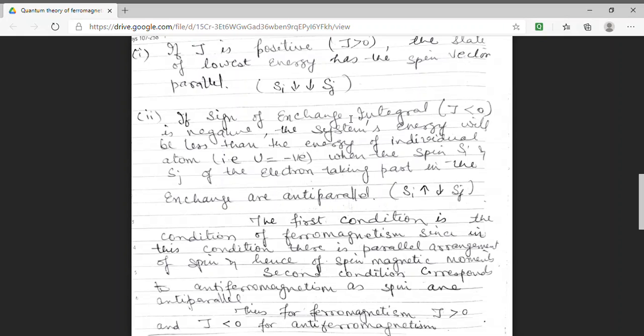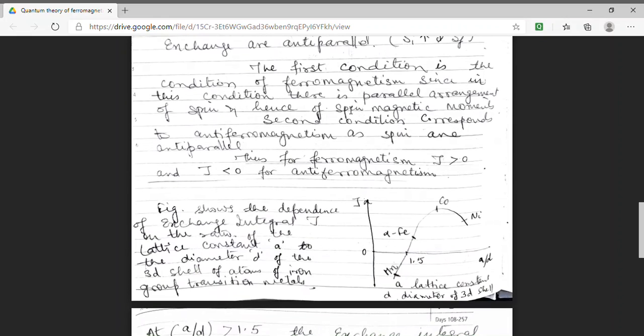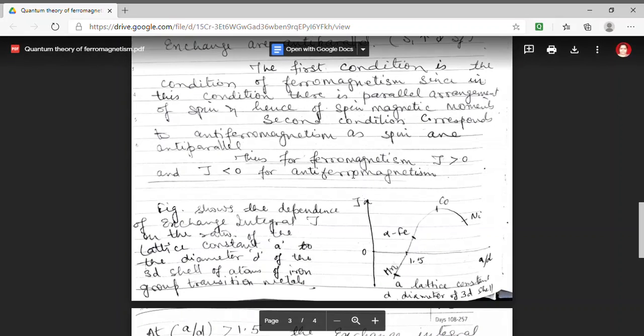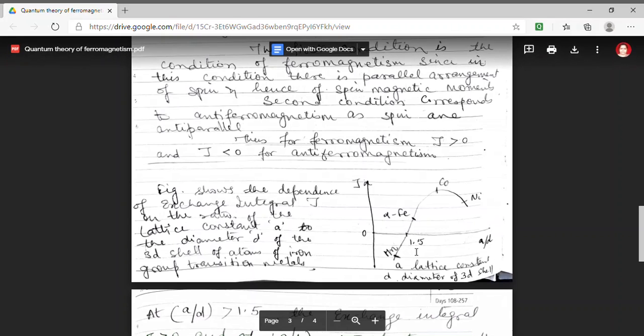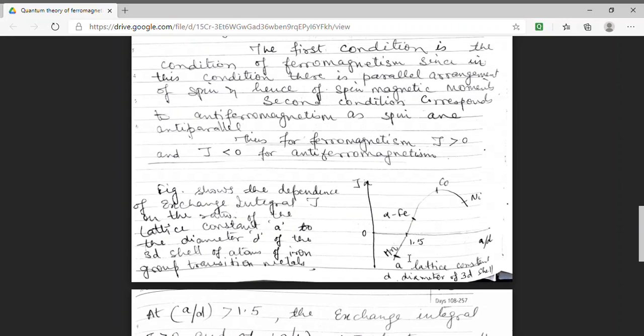So, in order to show this, we are plotting a graph. This is the graph between exchange integral and on x-axis, we have plotted the ratio of lattice constant A to the diameter D of 3D shell. In this graph, we have plotted iron group transition metals.